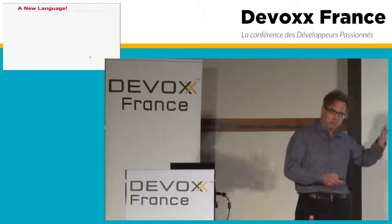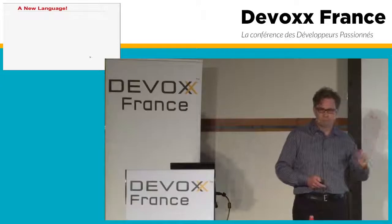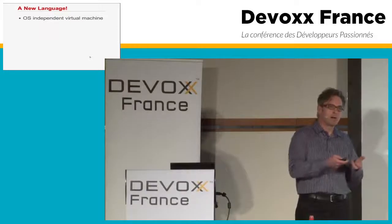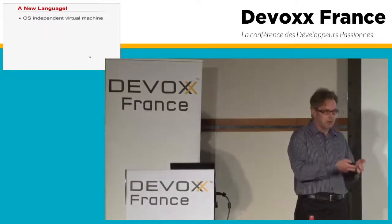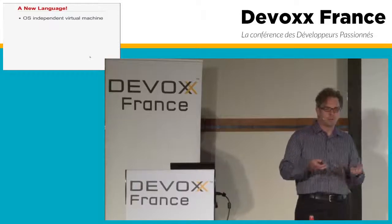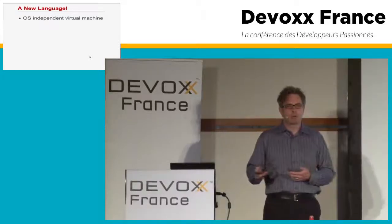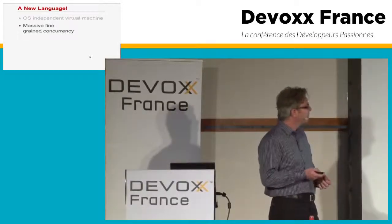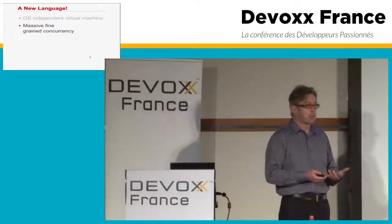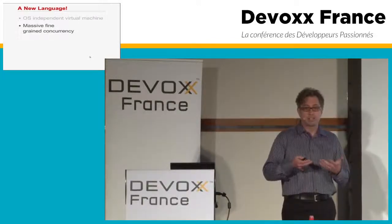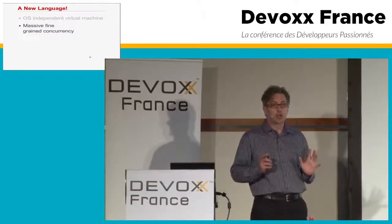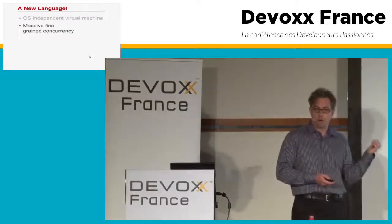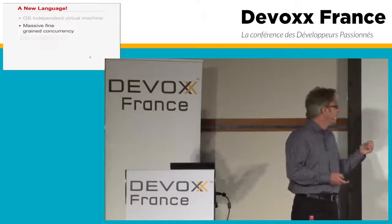These are the qualities of the language that came out of this. They knew they wanted to run on different machines - not an architecture-dependent platform. Solaris was the primary platform but they wanted to cross-compile. They knew they needed massive, fine-grained concurrency. A telephone exchange needs to be highly concurrent - you need to do lots of things at the same time. When you hear Erlang described as a concurrent programming language, it was all driven by requirements early on in history.